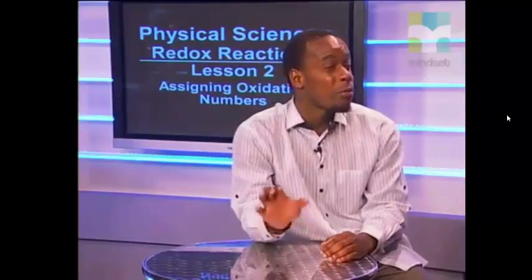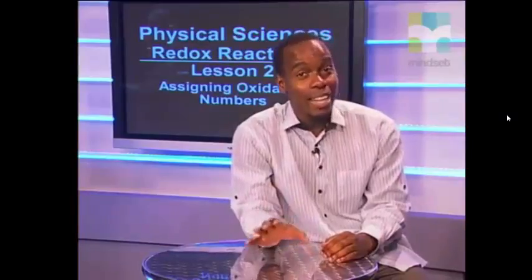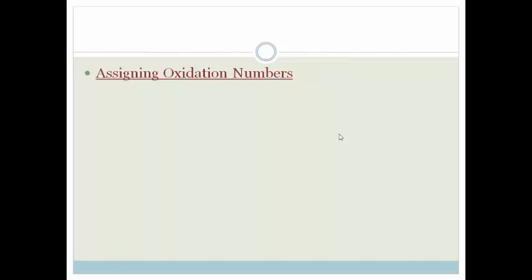Thank you, Nelly, for the explanation of the rules on how to assign oxidation numbers. Grade 11s, please make sure you know these rules very well. They are important as they help us to keep track of which elements in a reaction lose electrons and which gain electrons. This is very important — you need to know how to assign oxidation numbers. If you don't know how to assign oxidation numbers, you will not be able to tell which of the atoms are losing electrons and which are gaining electrons, and you cannot therefore work out which have been reduced and which have been oxidized. Please go through these steps one by one, and when you feel confident, go through the assessment in the enable system. Have a great day.